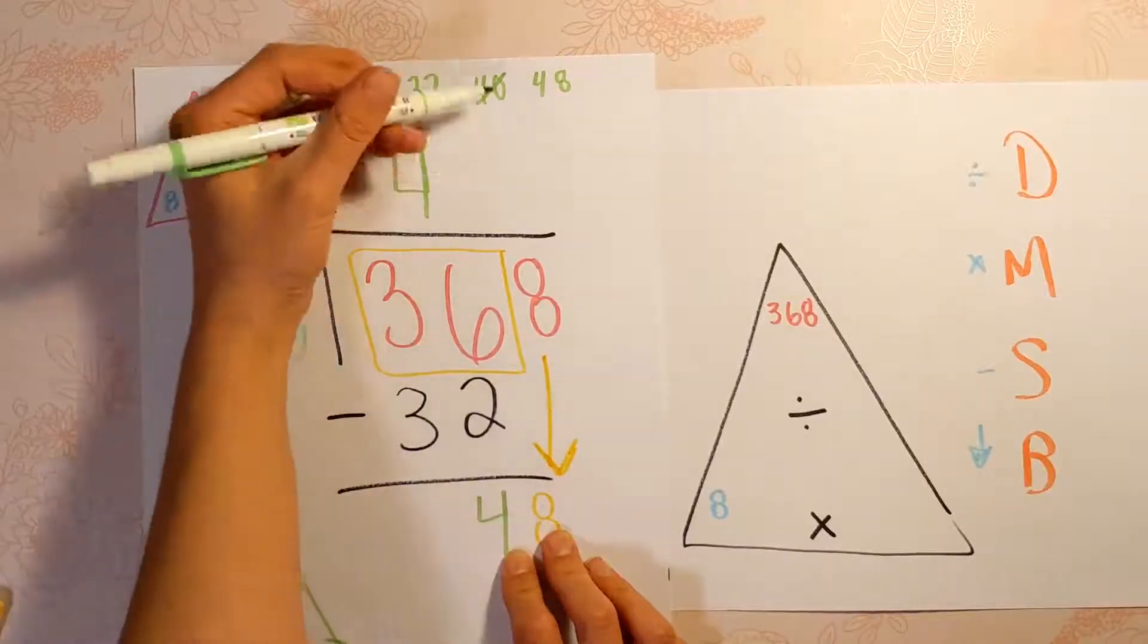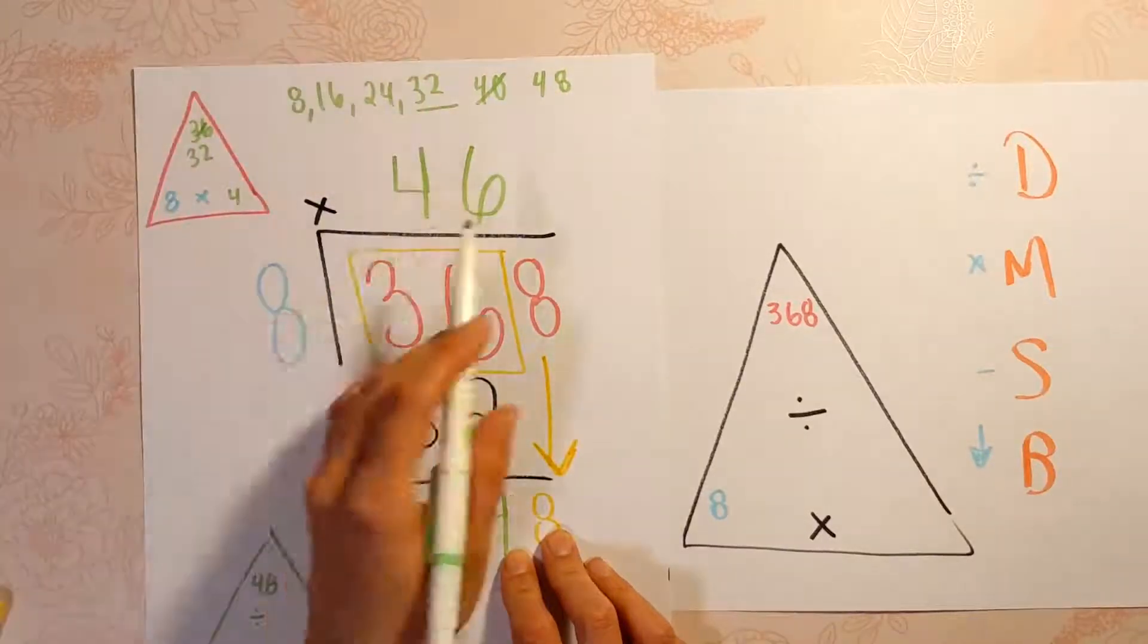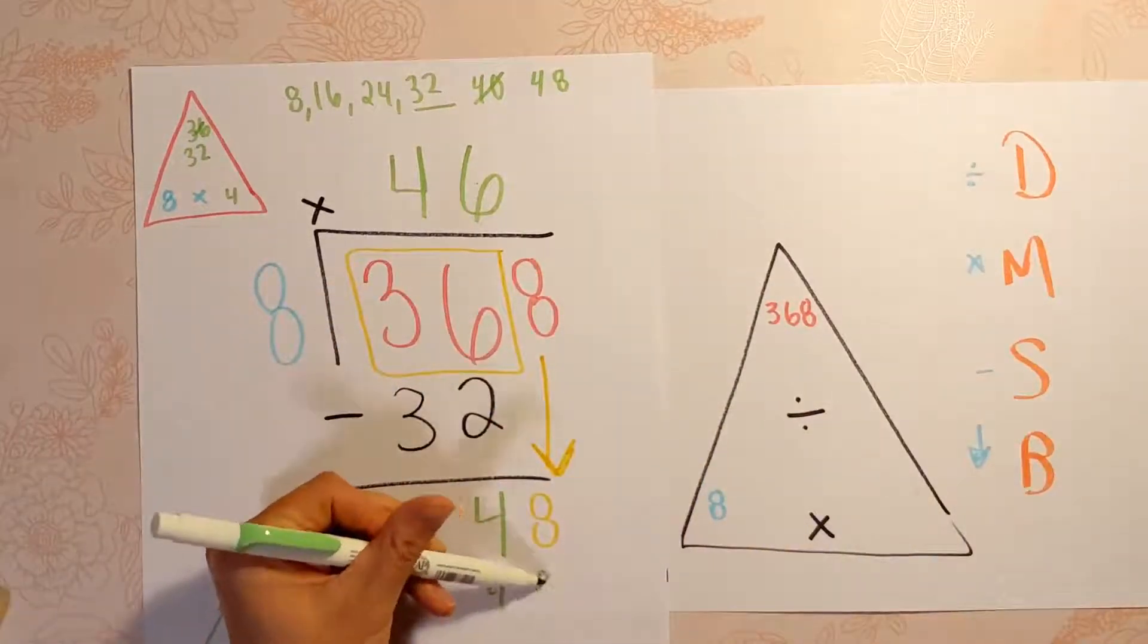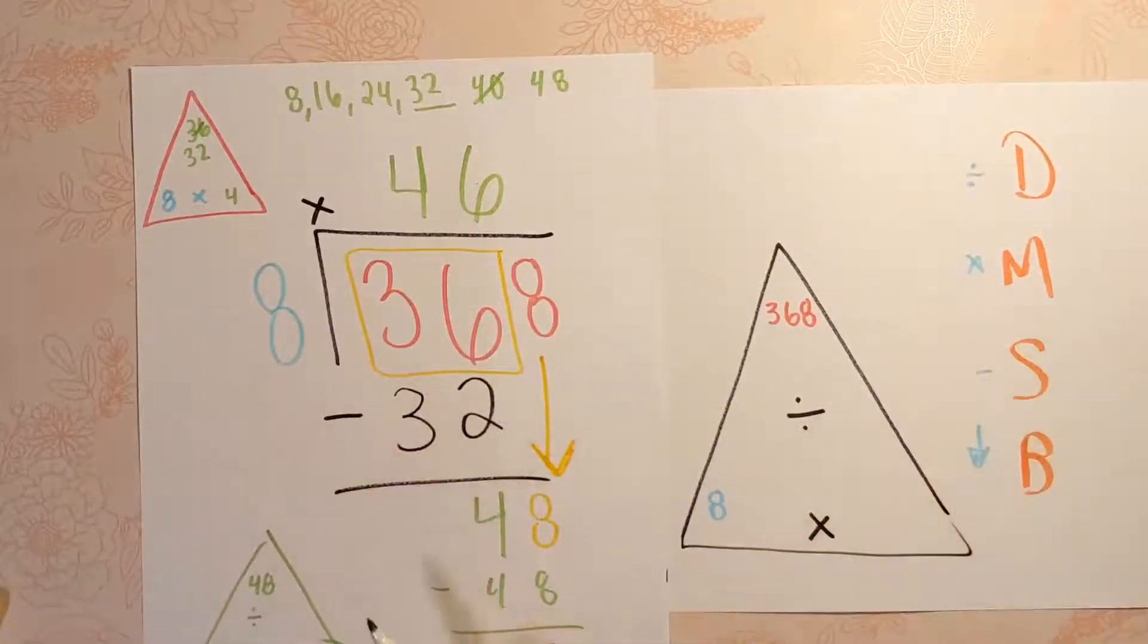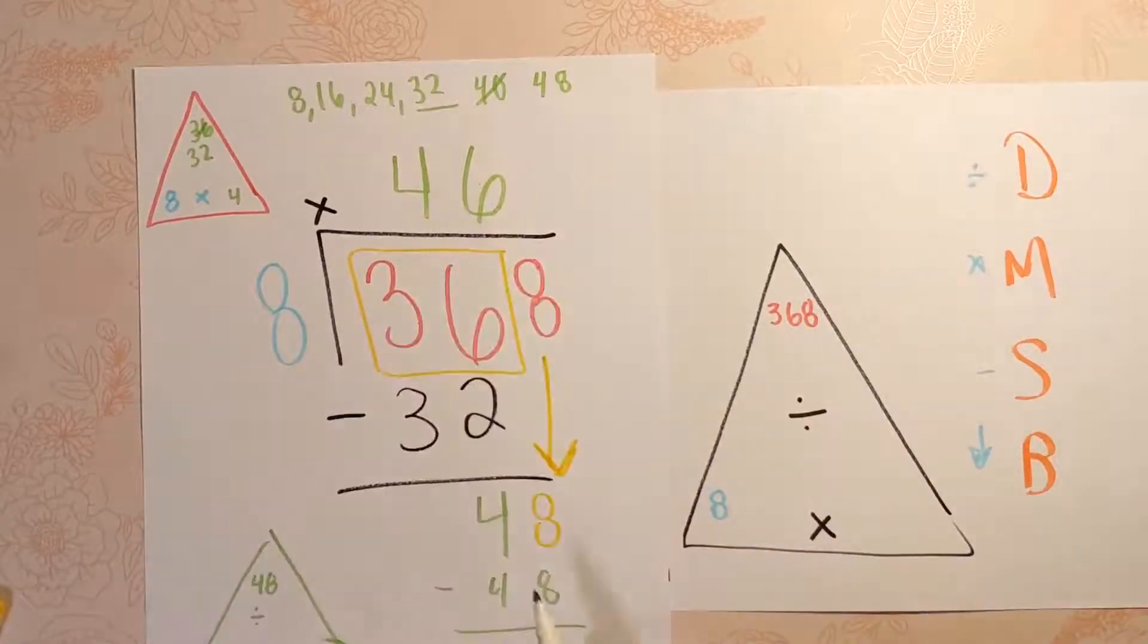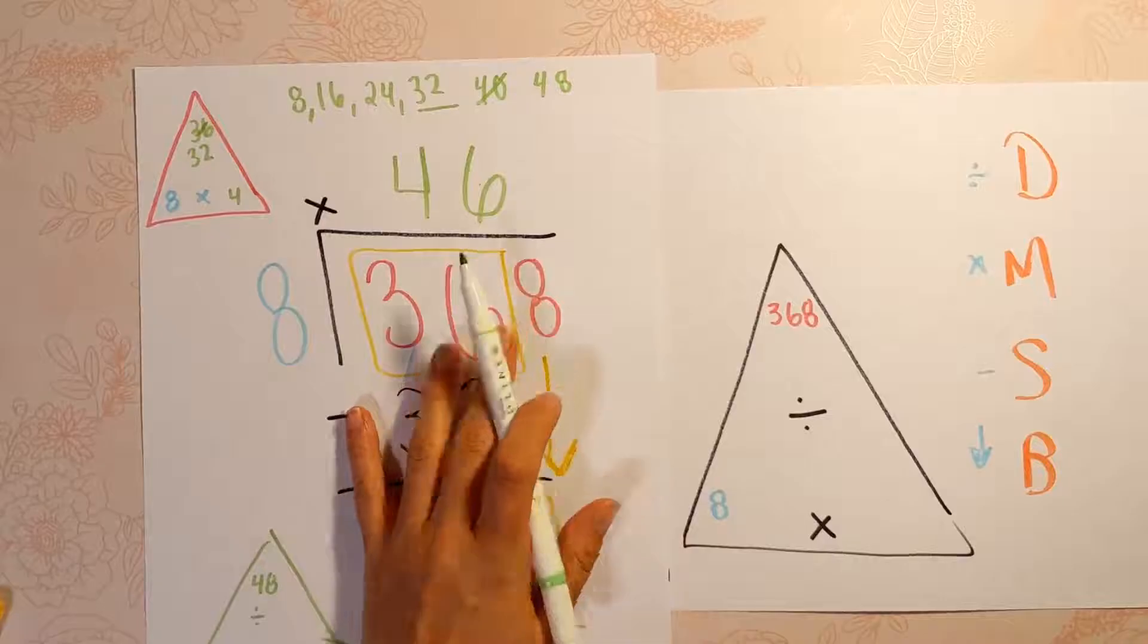Therefore, 48 divided by 8 is 6. Multiply it out to check if you have any remainders. 6 times 8 is 48. Subtract, 0. You're done. If this was a 1 or a 2 or a 3, you'd put it up here as a remainder. But this fit in perfectly.